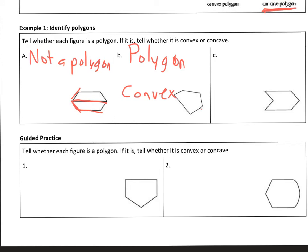Next figure - that is also a polygon. All of its sides are line segments, it's closed. So that one is a polygon.